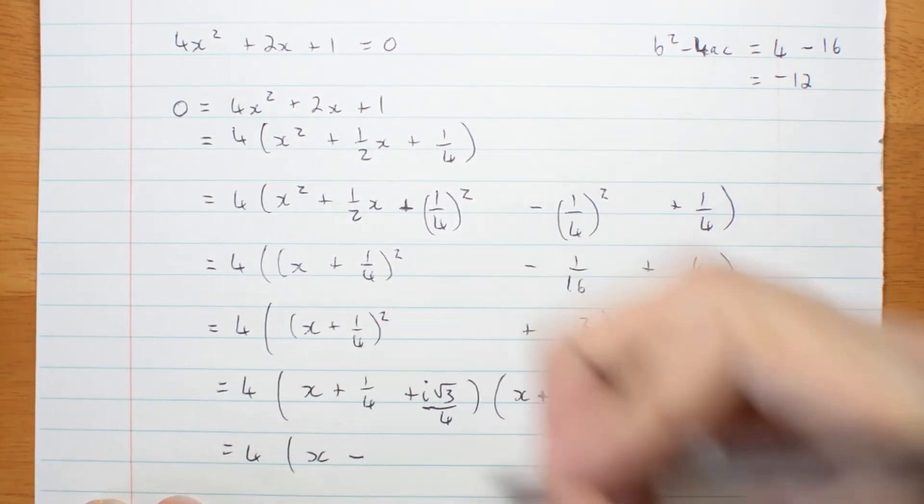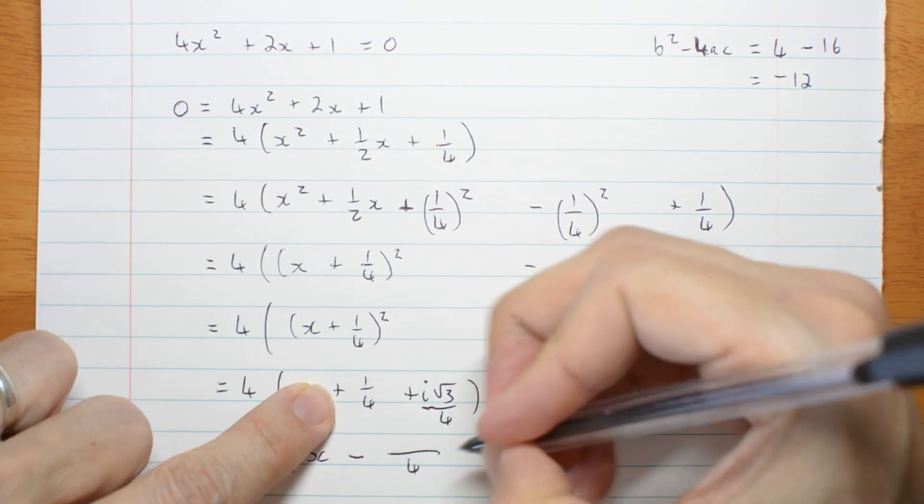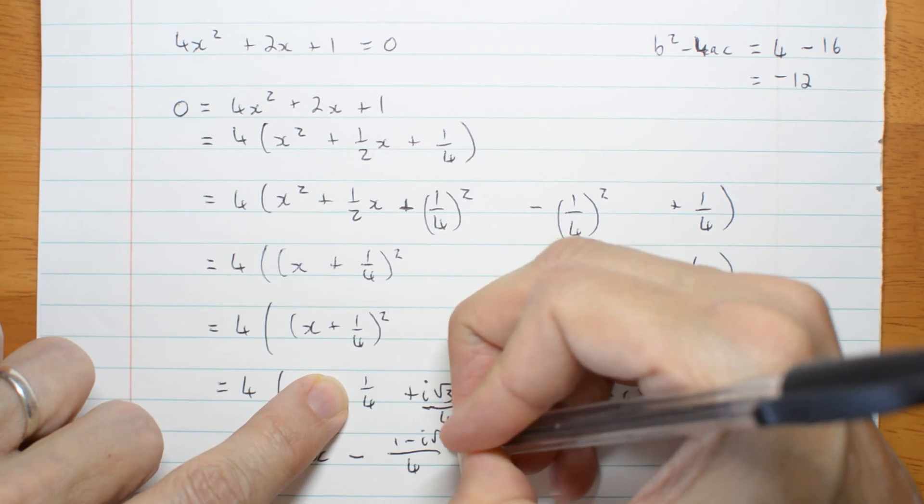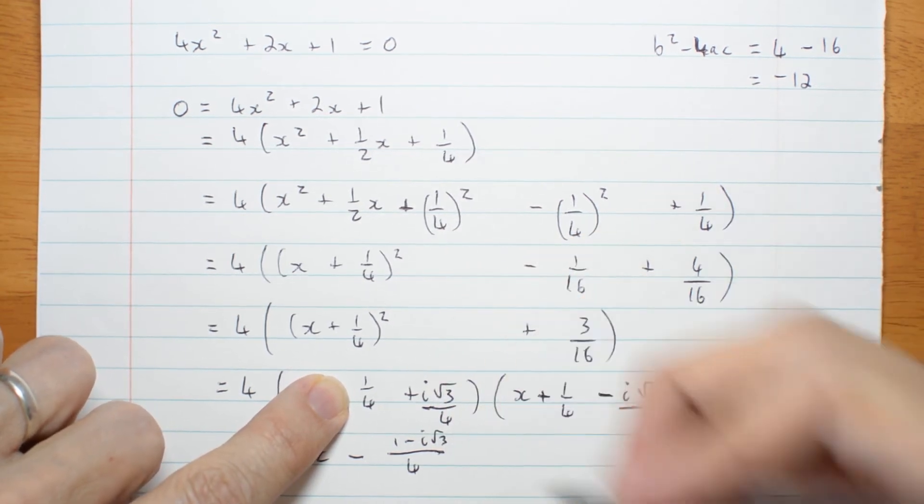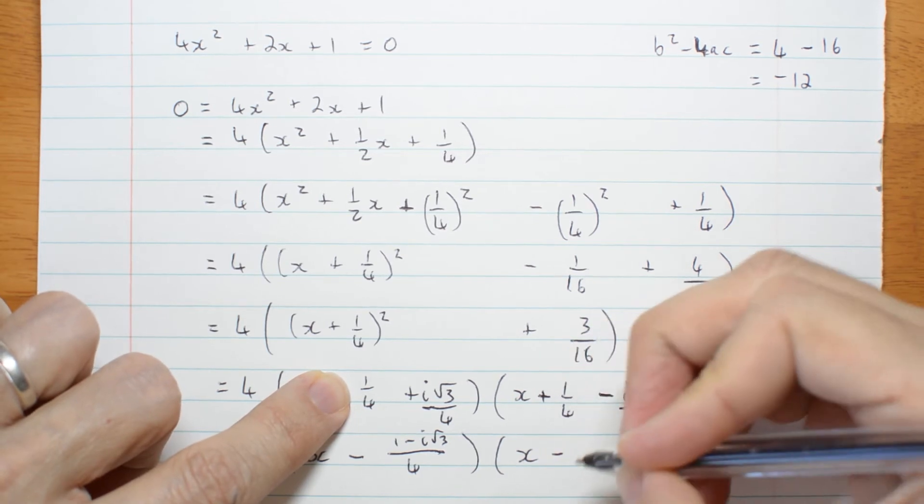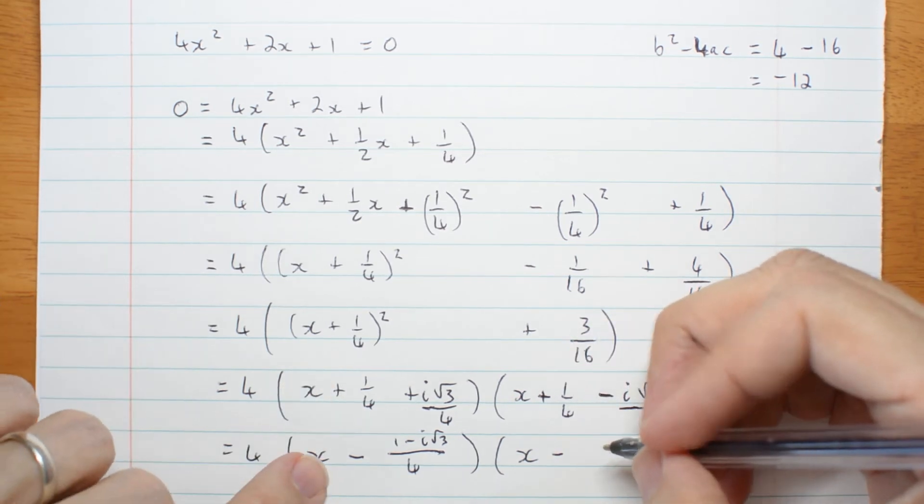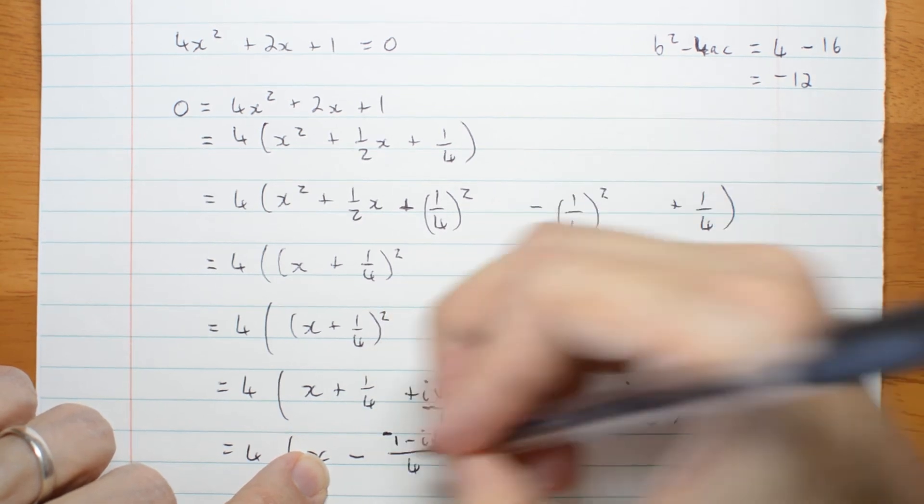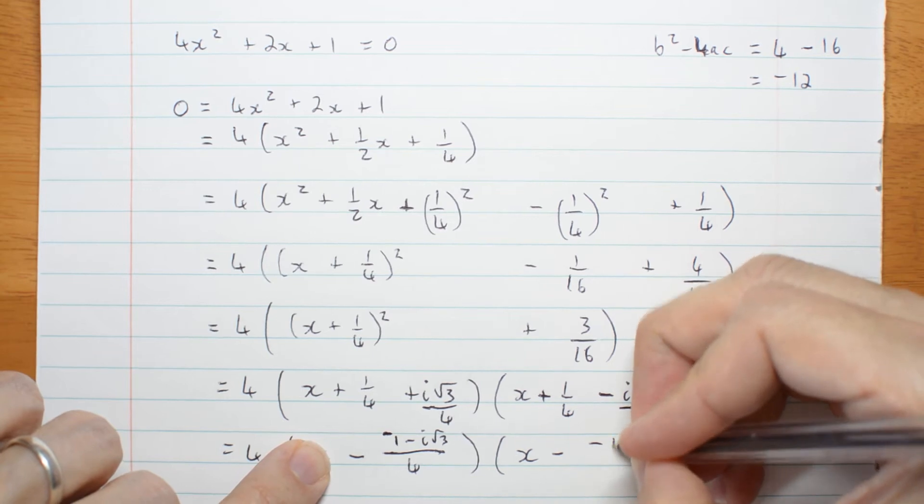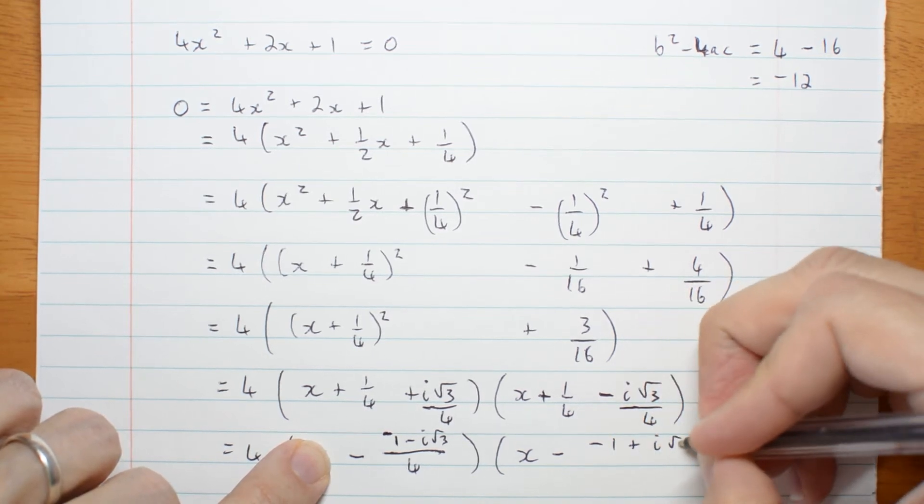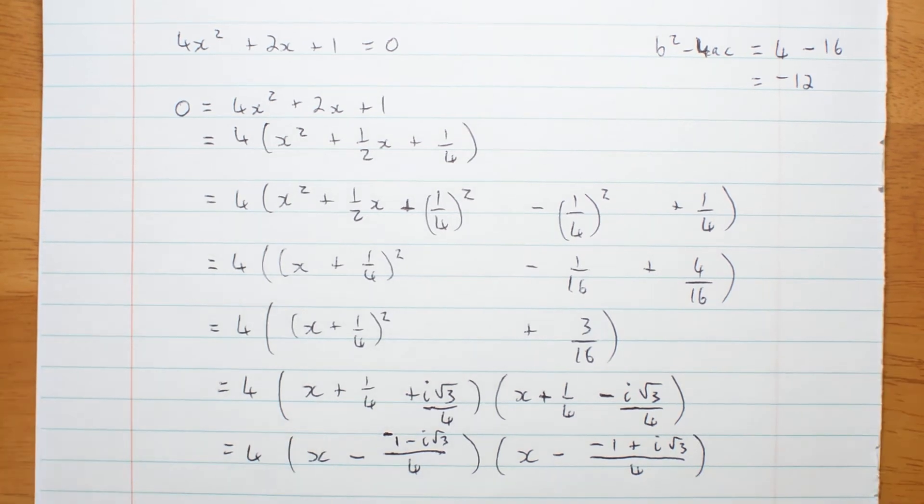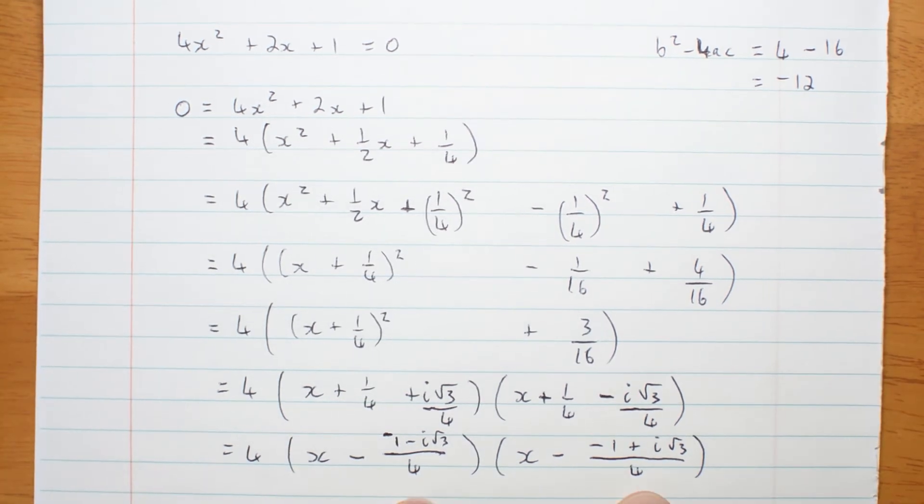x minus. They're both over 4. And what are they? 1 minus i root 3. Or root 3i. It doesn't matter. And this one is x minus. No, I haven't got it right. Negative 1 minus i root 3. I'm making mistakes today. Negative 1 plus i root 3 all over 4. So now it's very clear. Those are my two solutions.